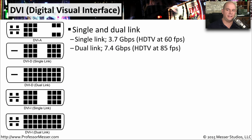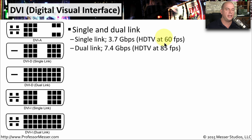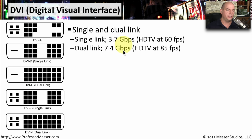One very common display interface type is the DVI interface. This stands for Digital Visual Interface. There are two different versions: a single link and a dual link. The single link can run up to 3.7 gigabits per second, allowing full HD at 60 frames per second. If you need a higher resolution or frame rate, dual link DVI runs at 7.4 gigabits per second and allows HDTV signals at 85 frames per second.